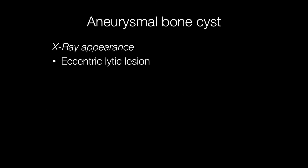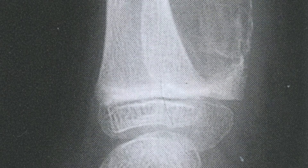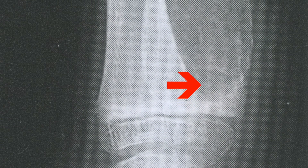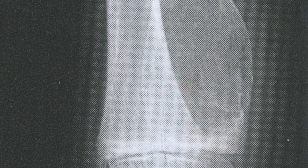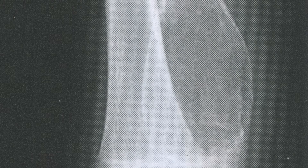The typical x-ray appearance of an aneurysmal bone cyst is an eccentric lytic lesion, and here is an x-ray of an aneurysmal bone cyst.